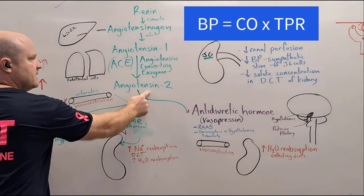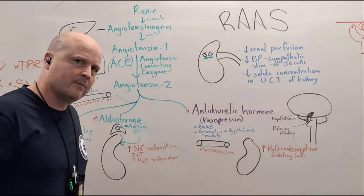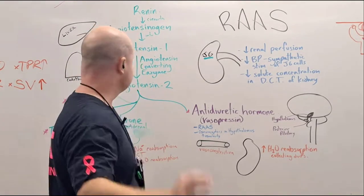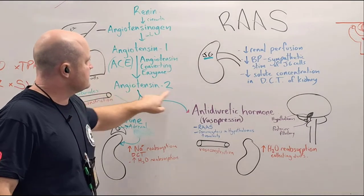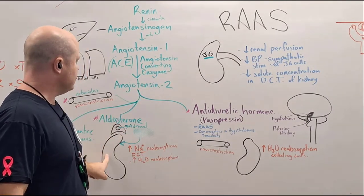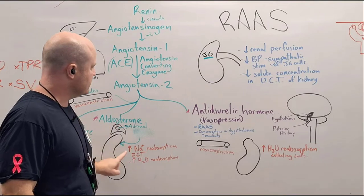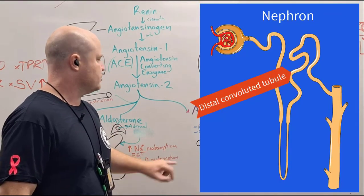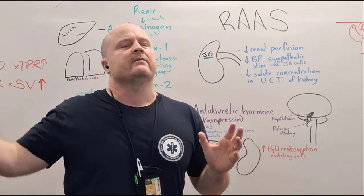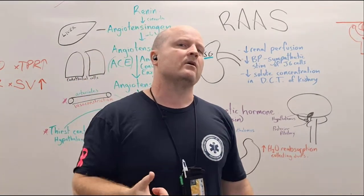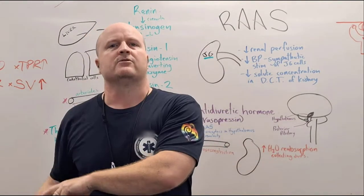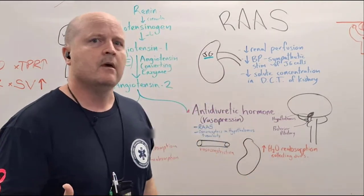Next, angiotensin 2 is going to stimulate our thirst center in our hypothalamus. If we drink more, that's going to increase our blood volume, which increases our blood pressure. Angiotensin 2 also causes the release of aldosterone from our adrenal glands, which then travels back into the kidney. Aldosterone's job is to increase sodium reabsorption from our distal convoluted tubule. If we draw sodium out of our nephron and back into circulation, fluid follows solute — fluid comes out of the kidneys and back into circulation, maintaining our blood volume and helping our blood pressure.